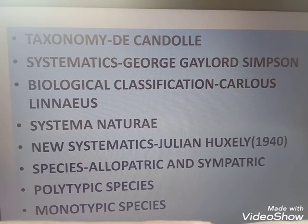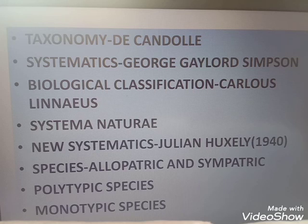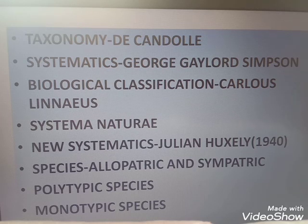The next term is systematics. Systematics is the study of biological diversity and its origin. A systematic study means a proper, organized arrangement — for example, following a timetable and doing daily practice problems. So, systematics means the study of biological diversity and its origin.